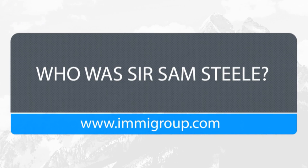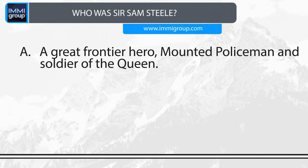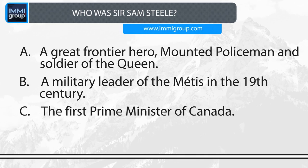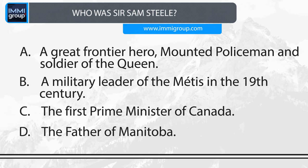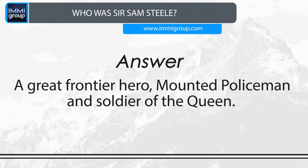Who was Sir Sam Steele? A. A great frontier hero, mounted policeman and soldier of the Queen. B. A military leader of the Métis in the 19th century. C. The first Prime Minister of Canada. D. The father of Manitoba. Answer: A great frontier hero, mounted policeman and soldier of the Queen.